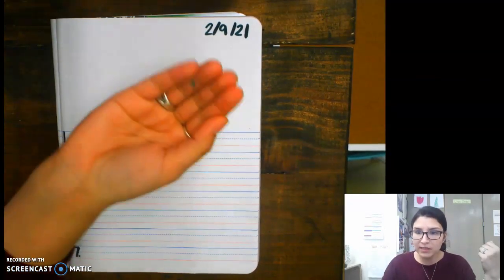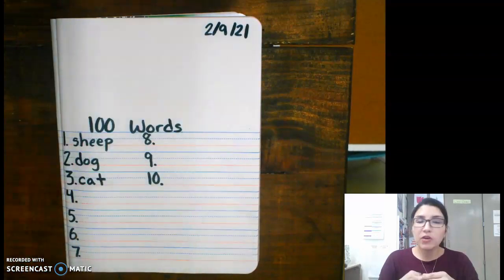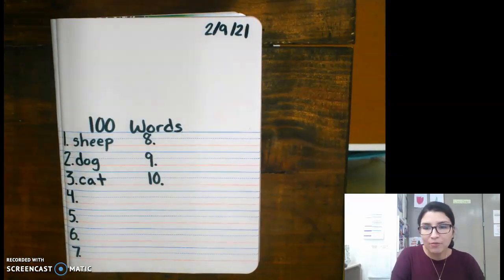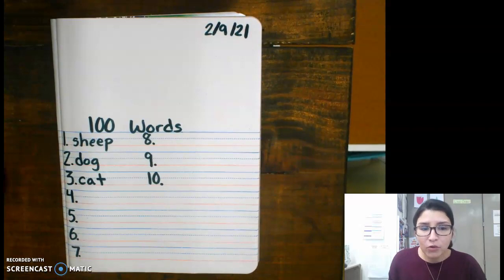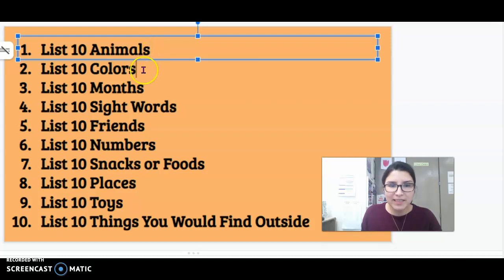go ahead and grab a book. List 10 animals, list 10 colors, list 10 months, list 10 sight words, list 10 friends, list 10 numbers, list 10 snacks or foods, list 10 places, list 10 toys, list 10 things you would find outside, like an ant, a bee, grass, tree, stuff like that.